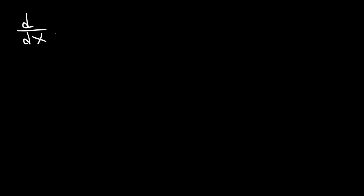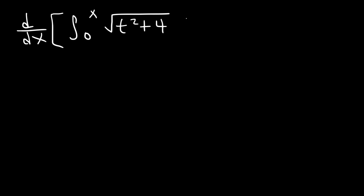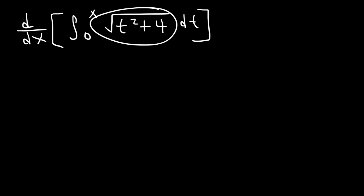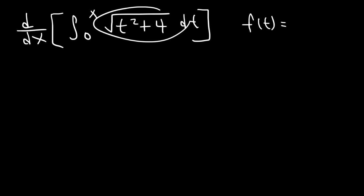Let's find the derivative with respect to x of the integral from 0 to x of the function square root of t squared plus 4, dt. Now, it's going to be difficult to integrate this function and then differentiate it, so there has to be an easier way. Perhaps you realize that the answer is going to be f of x, which is just the square root of x squared plus 4.